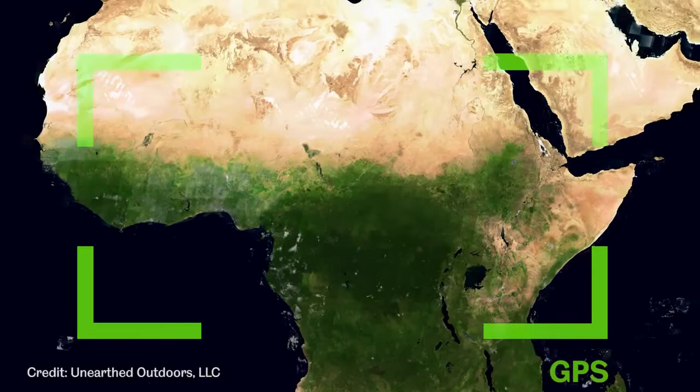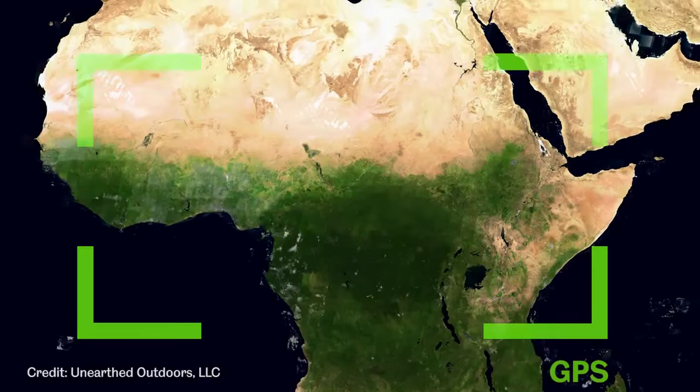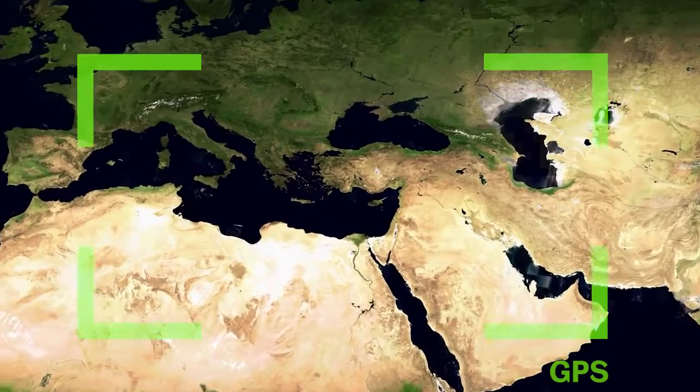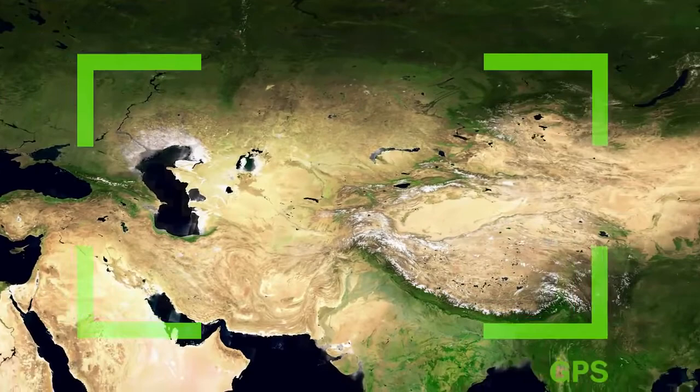Because just like the satellite navigation system, this GPS looks at your DNA and triangulates your coordinates, your geographical coordinates, to find out where your DNA was forged. Which gene pools came together and made you into being that later on may have moved to the UK or England, but this is not really your home.